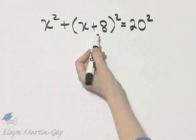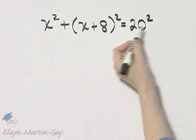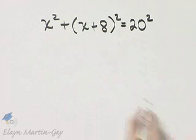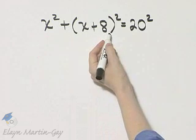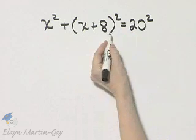Length of leg squared plus length of leg squared is the hypotenuse squared. Be careful when squaring this binomial. That's x squared plus 16x plus 64.